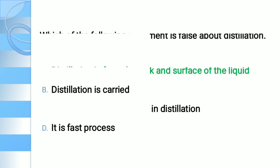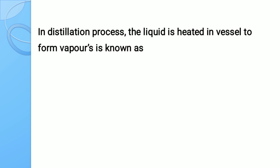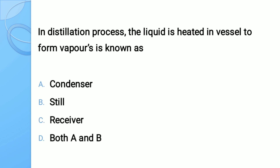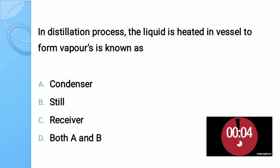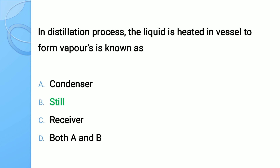Question number two: In the distillation process, the liquid is heated in a vessel to form vapors — the vessel used for this purpose is known as? Options: A) condenser, B) still, C) receiver, D) both A and B. The correct answer is still. Still is the vessel which is used for the purpose of heating the liquid.